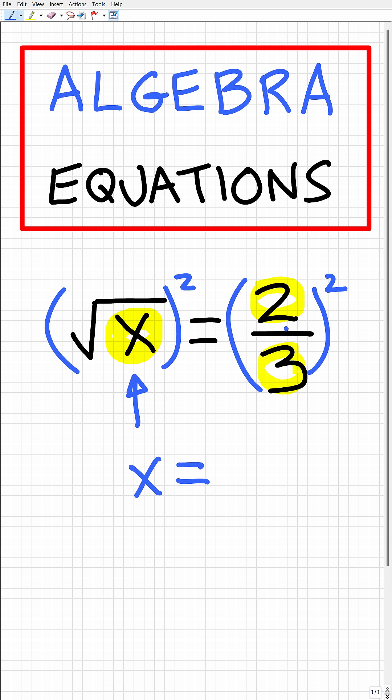So that's going to leave us with two thirds squared, and two thirds squared is two thirds times two thirds, which of course is going to be two times two is four, three times three is nine. So x is equal to four ninths.